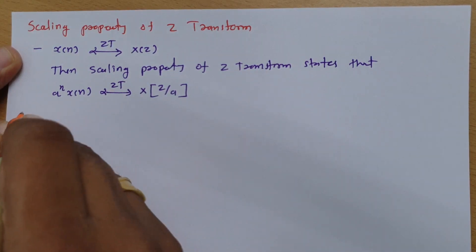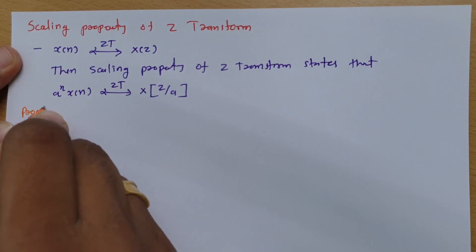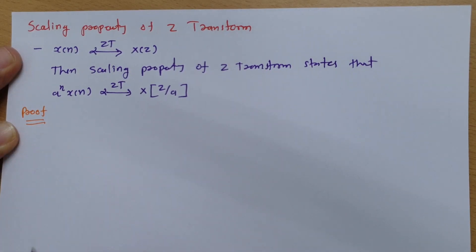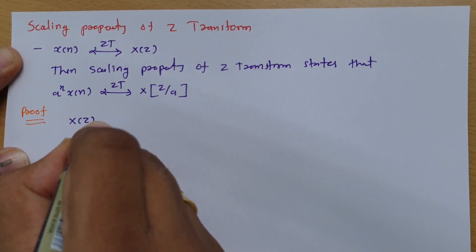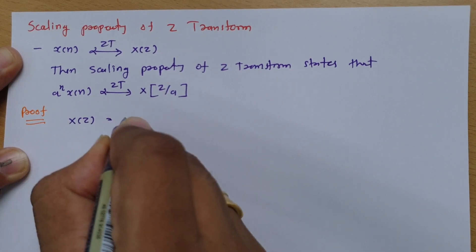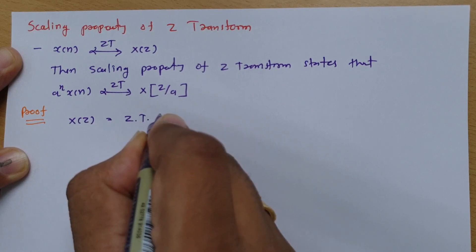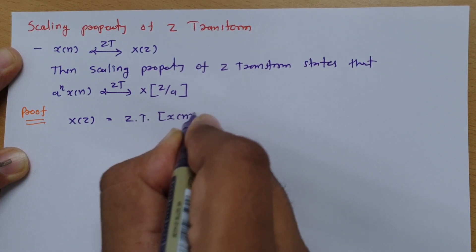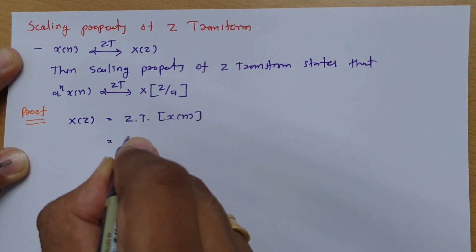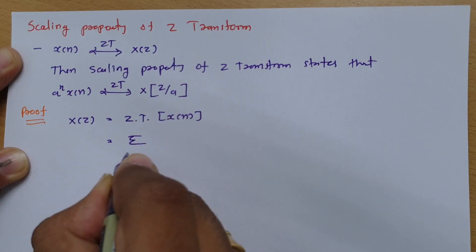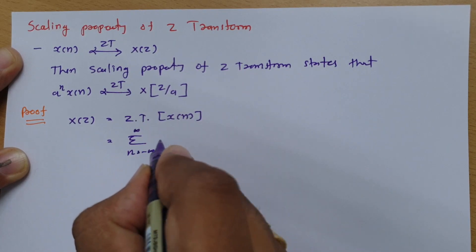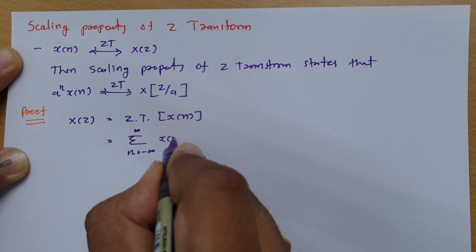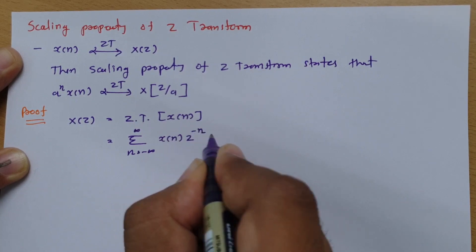Now, I will give you the proof of this property, and then we will see one example based on it. The Z transform of X of n is X of Z, and the basic formula of Z transform is the summation from n equals minus infinity to infinity of X of n times Z to the power minus n.